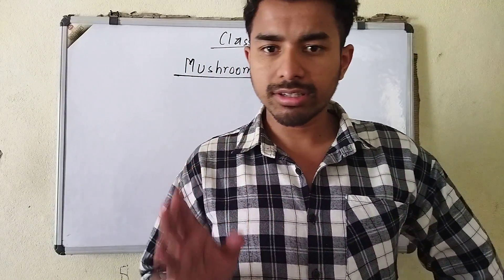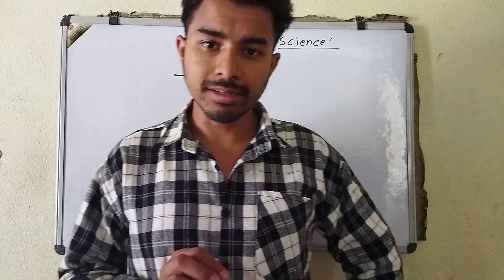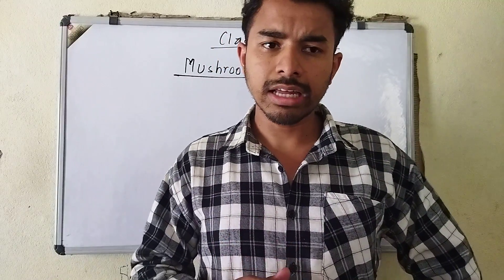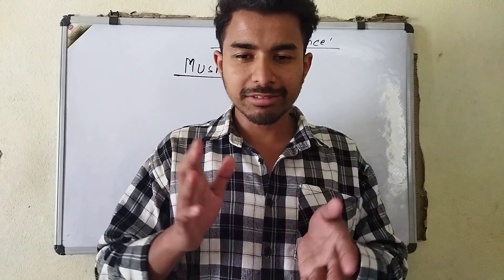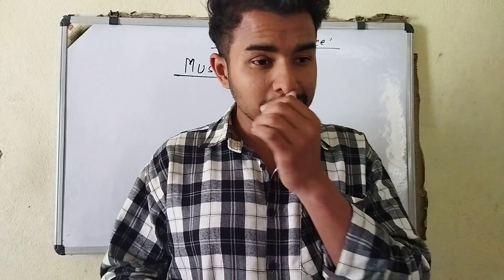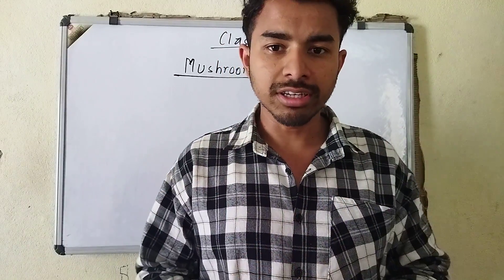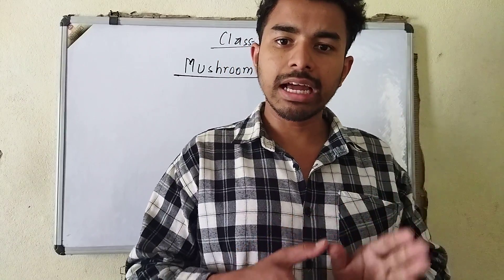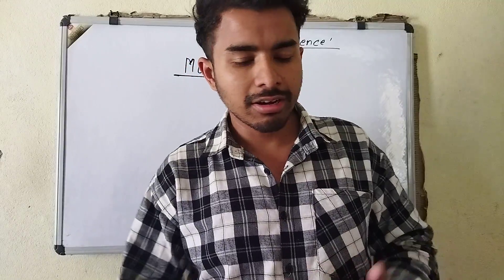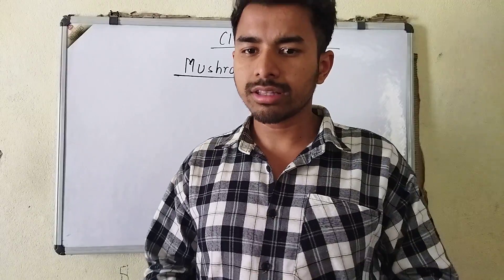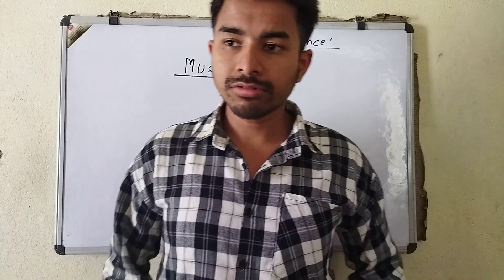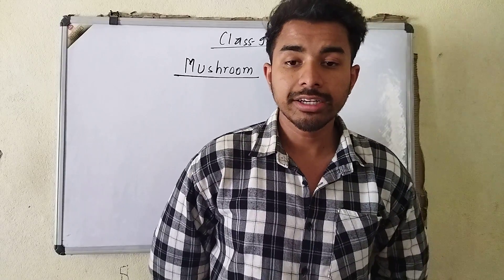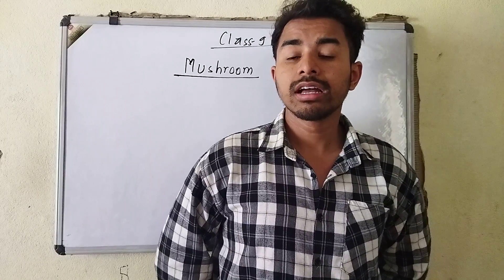Mushroom is a thallus plant. Thallus means it doesn't have any kind of differentiated plant body — no branch, stem, or leaf. This body is thallus. Mushroom's definition: mushroom is a non-green thallophyte. It has a saprophytic mode of nutrition.